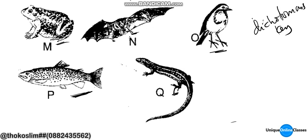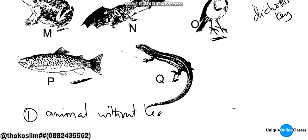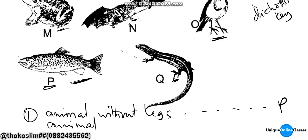This one — you can see legs; this one you can see legs. So step number one: animal without legs. That's P — this one, you can see it's a fish, so that one is P. Animal with legs.